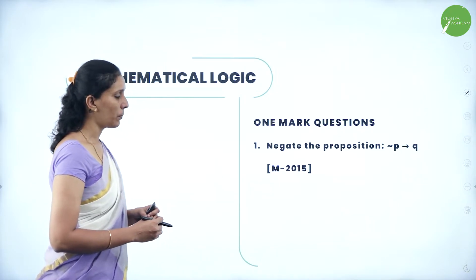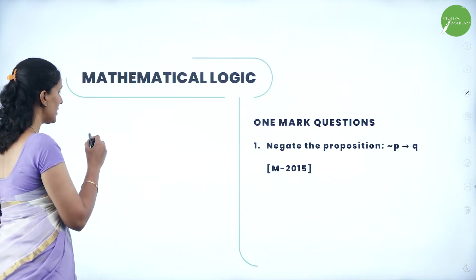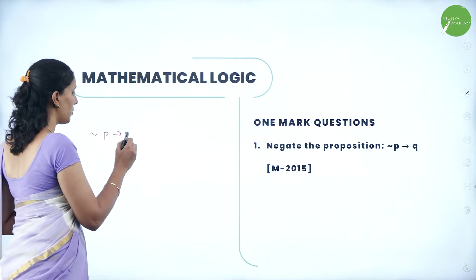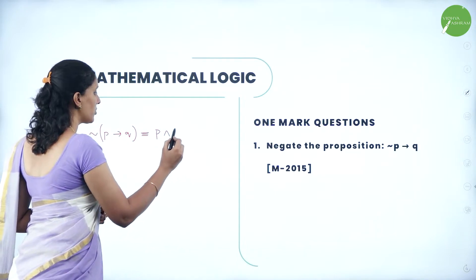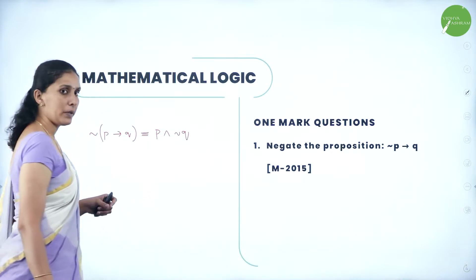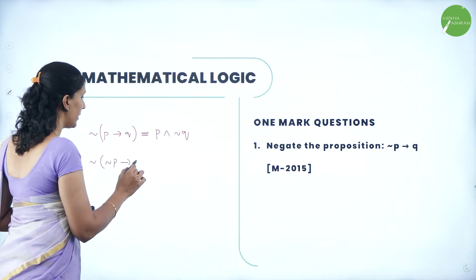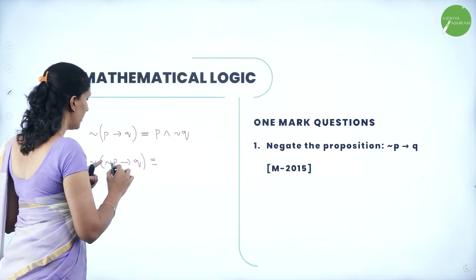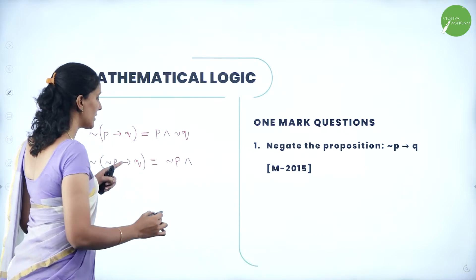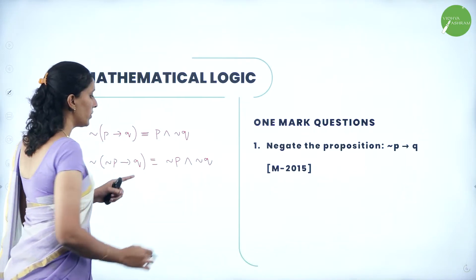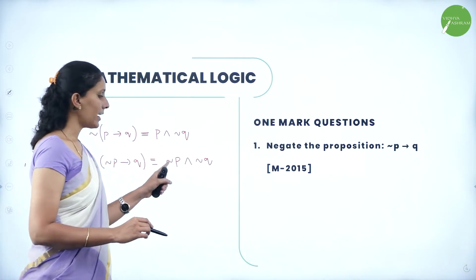So one mark questions: negate the proposition — negation P conditional Q. So we know the rule that is negation of any conditional statement is equivalent to P conjunction negation of Q. Now here we are negating negation P conditional Q. So from the statement here, P has to be written in the form of P only. So this is not P. So now this is conjunction — that is, and not Q. So this is negation P and, or we can say conjunction negation Q, or we can say not P and not Q.